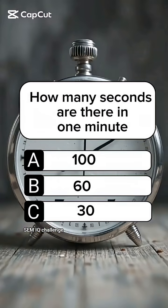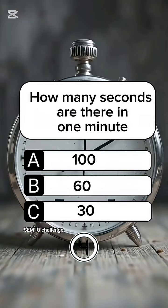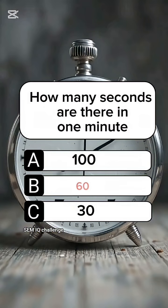Question 1. How many seconds are there in one minute? Answer B, 60 seconds.